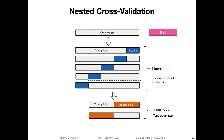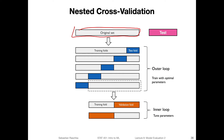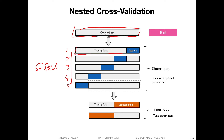Let's go through the illustration starting at the top with our original dataset. We have our original dataset — assume we also have another independent set for testing later, but this is our main training set. Similar to k-fold cross-validation, we have an outer five-fold loop. In each round (1, 2, 3, 4, 5), we split the dataset into training folds and a test fold. In contrast to regular k-fold cross-validation, where we would fit the model on the training folds and evaluate on the test folds, here we go one step further.